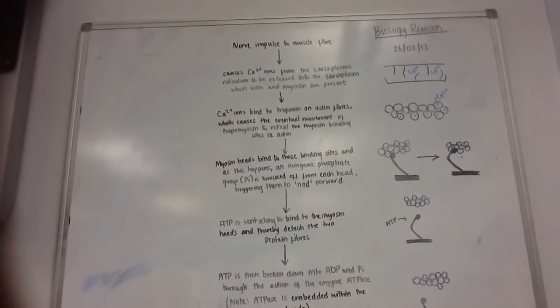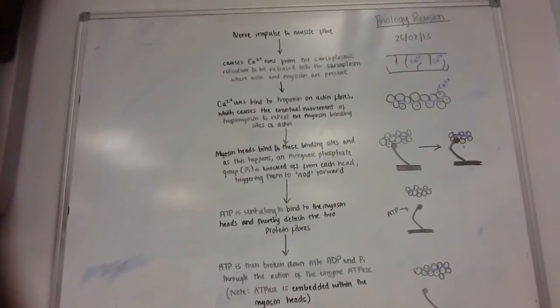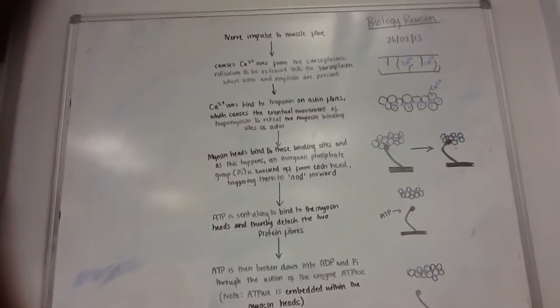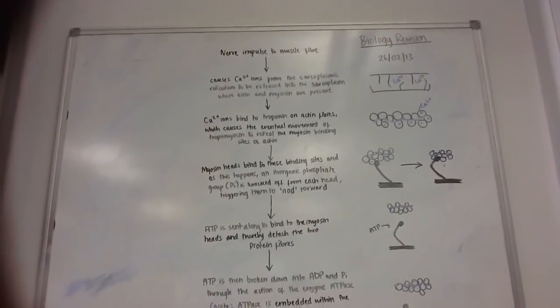Calcium ions will bind to the troponin on the actin fibres, which will cause the movement of tropomyosin to reveal the myosin binding sites of actin, which is demonstrated in that second figure.